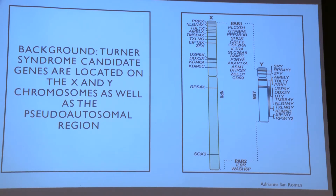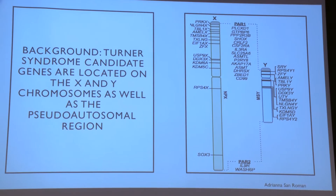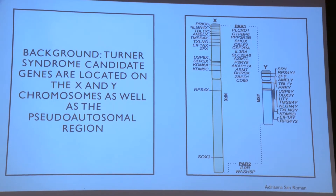What I'm going to call candidate genes are genes that are located on the X chromosome, the Y chromosome, or the region common to both, known as the pseudo-autosomal region, or PAR. These are the genes we're interested in in this study, specifically because Turner Syndrome patients aren't getting a double dosage of these genes since they're missing that second sex chromosome.